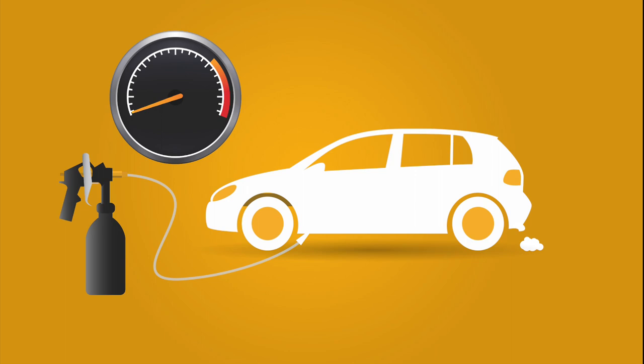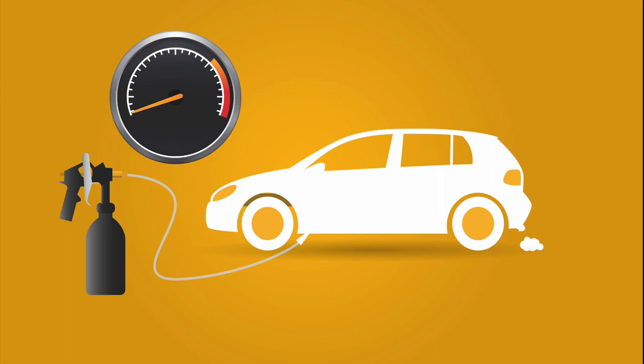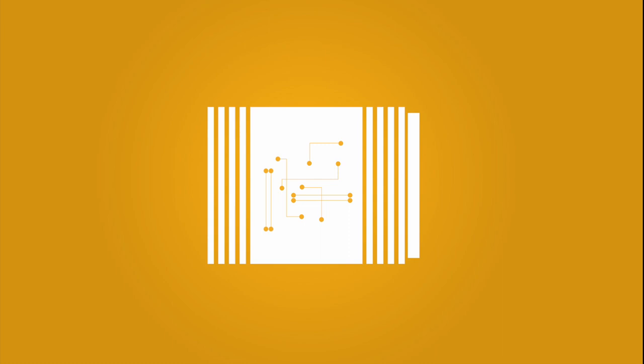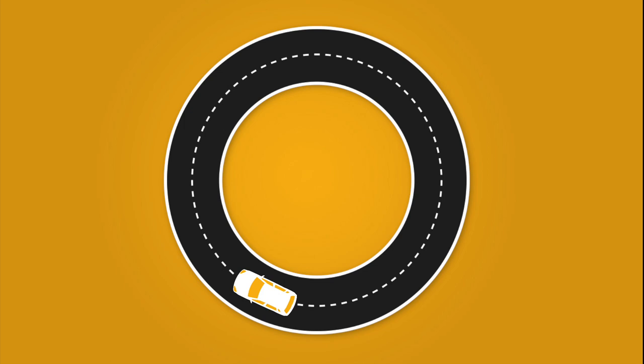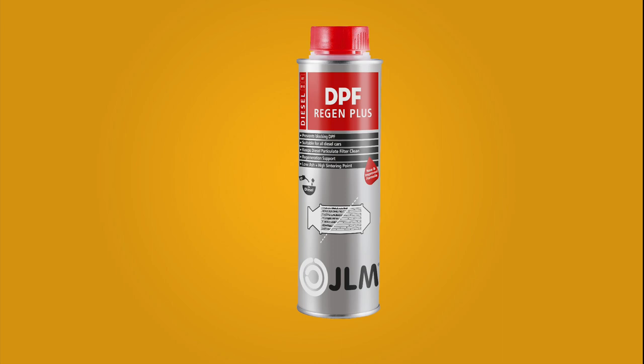The regeneration process may now commence. This can be done by using a program on the onboard computer or by a drive on the motorway. To guarantee smooth running of your car, we recommend you regularly add JLM Regen Plus to your diesel, and in the event of persistent problems, add JLM DPF Cleaner as often as necessary.